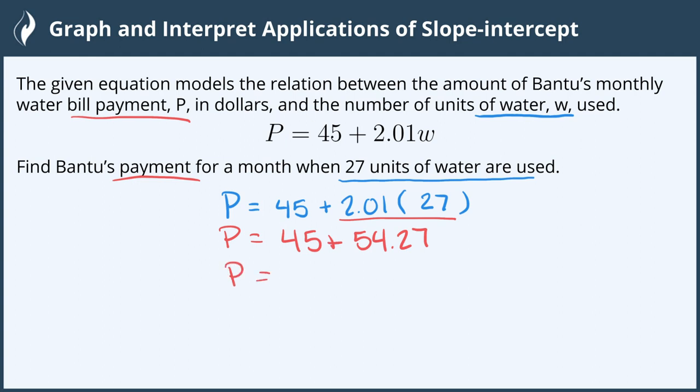Adding those together gives us 99.27, and this is his bill, so it's paid in money. And so we know that Bantu's monthly payment for this month with 27 units of water is $99.27, and we're all done.